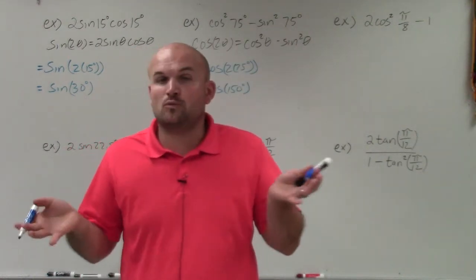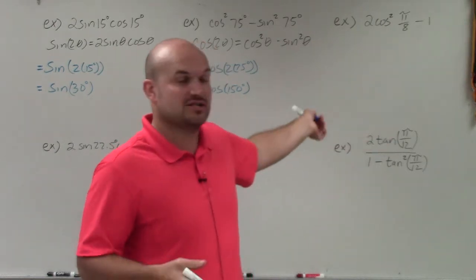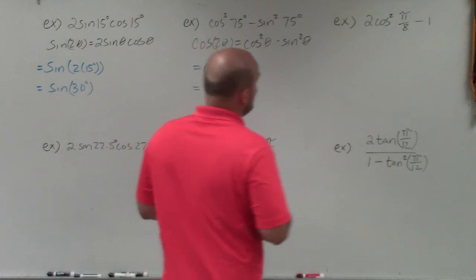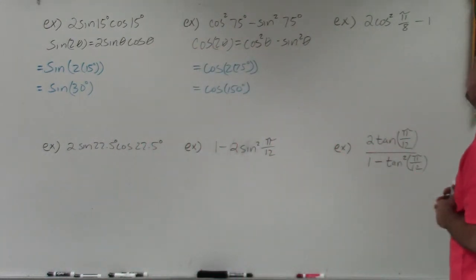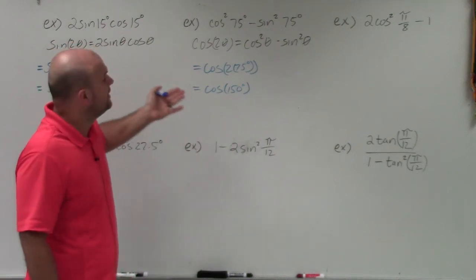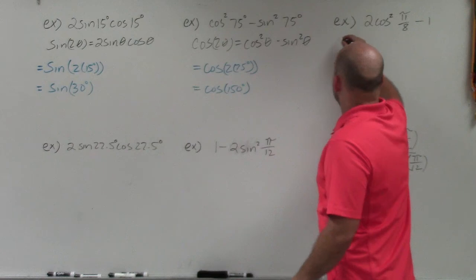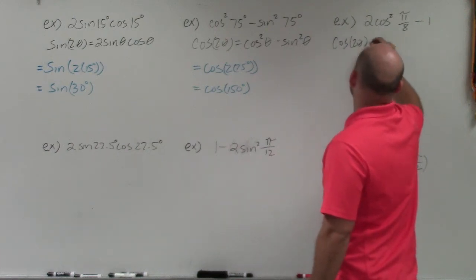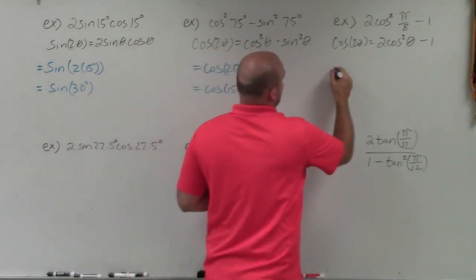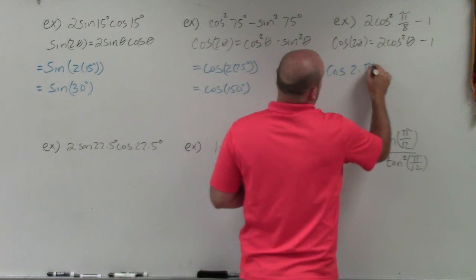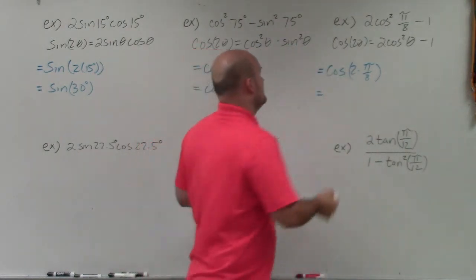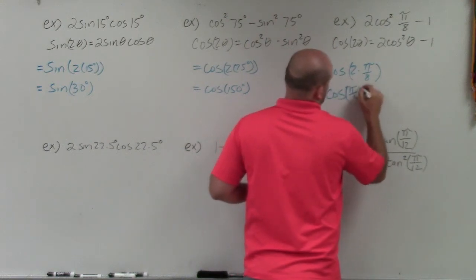Basically, I'm just looking at which double angle formula — sine, cosine, or tangent — my expression most resembles, then I plug in the value for theta. For the next one, we have 2 cosine squared of π/8 minus 1. This matches the cosine double angle form: cosine of 2θ equals 2 cosine squared θ minus 1. Plugging in π/8 gives cosine of 2 times π/8, which equals cosine of π/4.